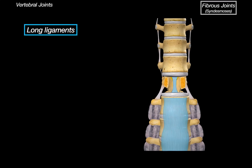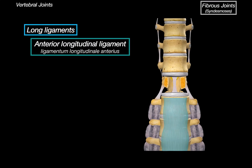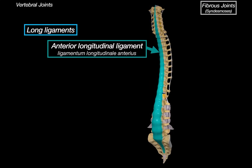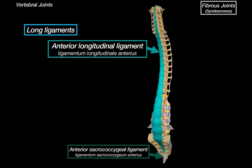Starting with the long ligaments: the anterior longitudinal ligament runs along the front of the vertebral bodies from the base of the skull all the way down to the sacrum. Its main job is to prevent hyperextension — stopping the spine from bending too far backwards. At the bottom, this ligament continues as the anterior sacrococcygeal ligament, anchoring into the front of the sacrum and coccyx and maintaining stability of the lower end of the spine.